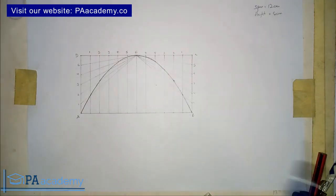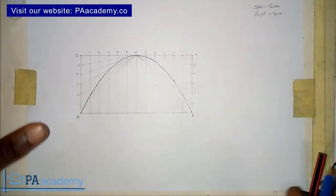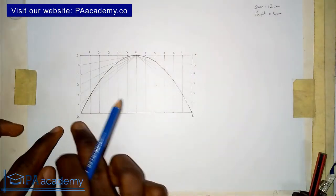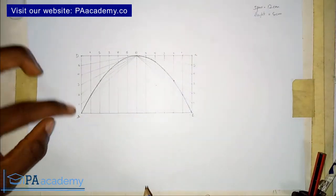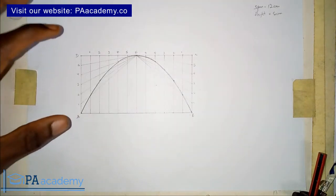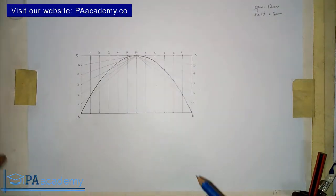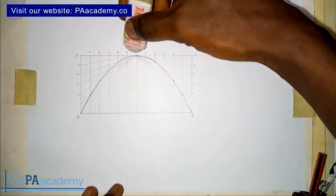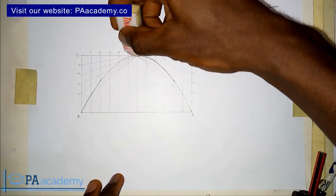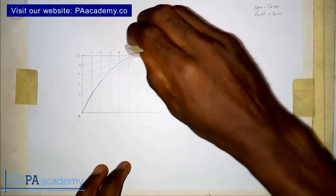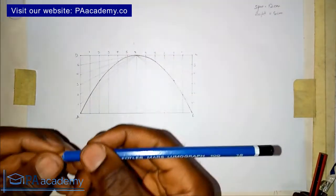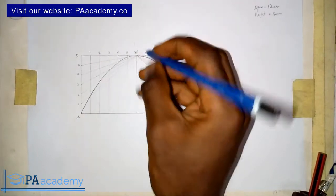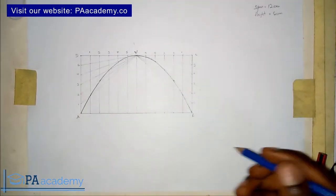Now, if you missed Part 1, let me give a brief recap. This length here represents the span, which is 12 cm, and from A to D represents about 6 cm — that is the length we used. I want to make a change: this point that I previously called E, let me change it to V. We are calling it V because this point represents the vertex.